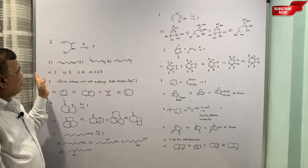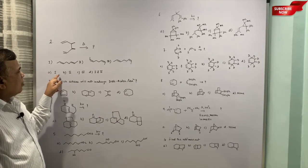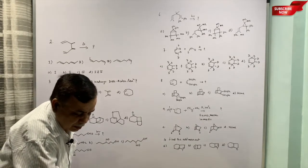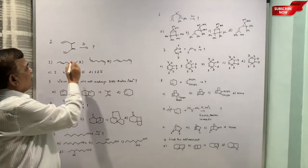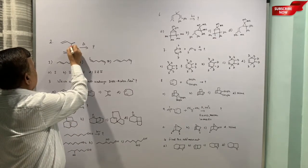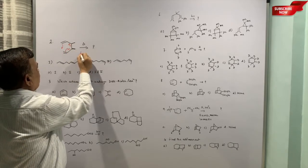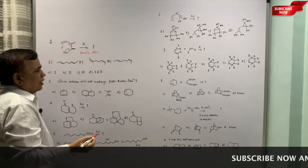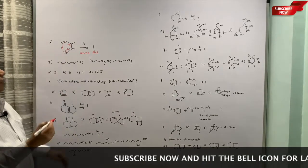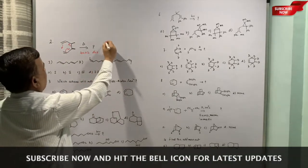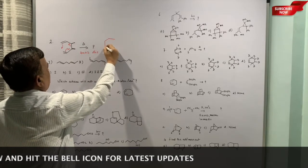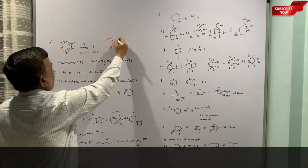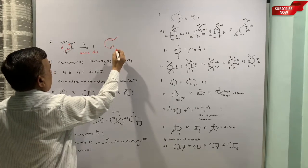This diene is heated and we are expecting three products are given and the options are either one is obtained, two is obtained, three is obtained, or a mixture of one and two is obtained. Now in this case again we have to define what is the system. This is 4n+2 and this has to be disrotatory ring opening or ring closure because here ring opening and ring closure is taking place simultaneously.